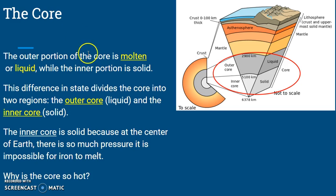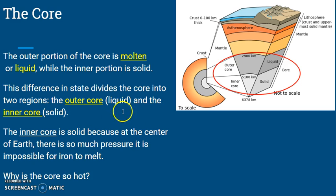The outer portion of the core is molten, which is another word for liquid, and the inner portion of the core is solid. The difference in state — one liquid and one solid — divides the core into two regions. The outer core is liquid and the inner core is solid. The gray part in the picture is liquid, and the inner portion is solid.